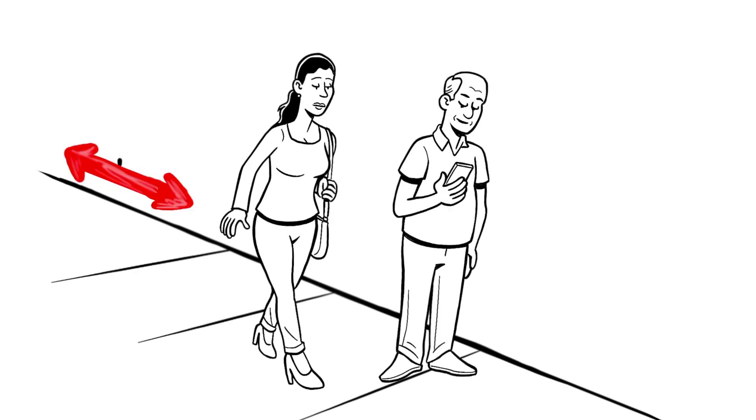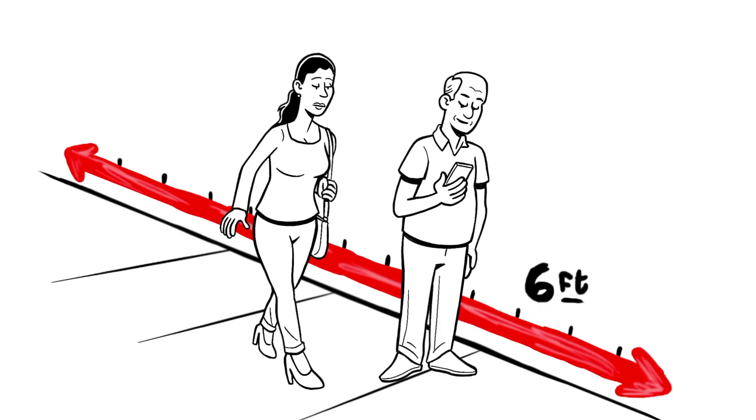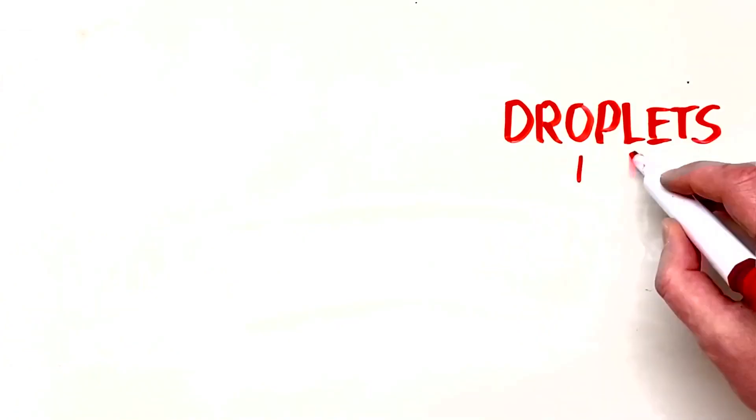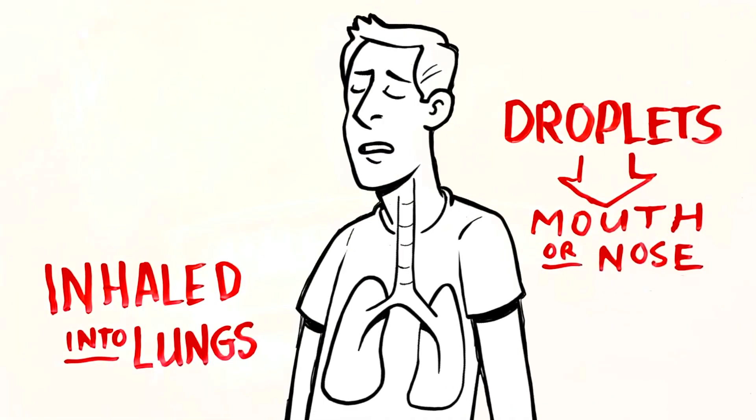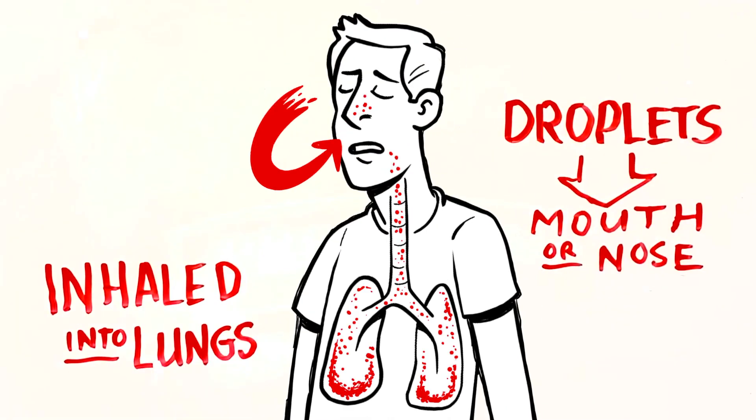First, you should understand that the virus spreads between people who are in close contact within six feet through respiratory droplets when an infected person coughs or sneezes. If the droplets land in the mouth or nose or are inhaled into the lungs, that person can be infected.